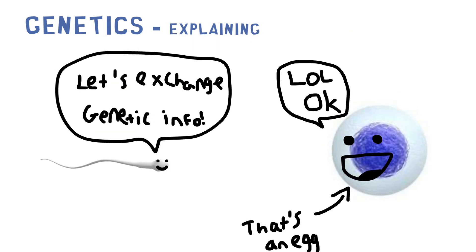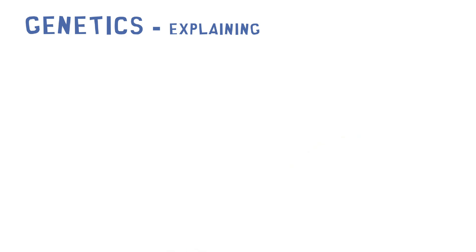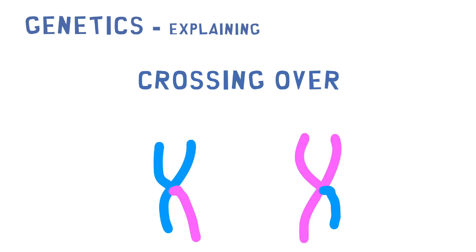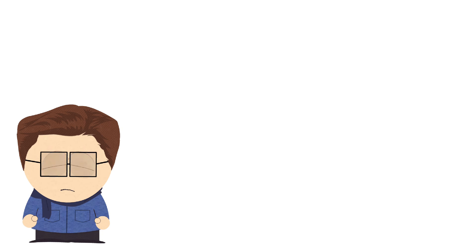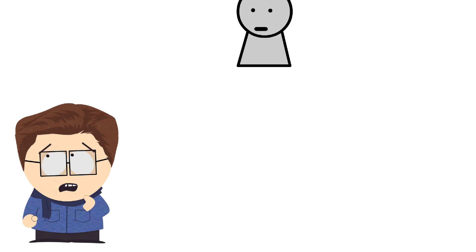Sometimes during this process, parts of the chromosome swap sections in a process called crossing over. This mixes up the genes and makes each person unique. Yeah, isn't that amazing? That is amazing, thank you Odin.